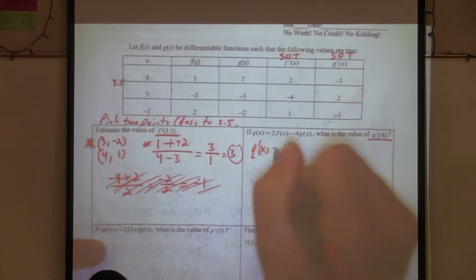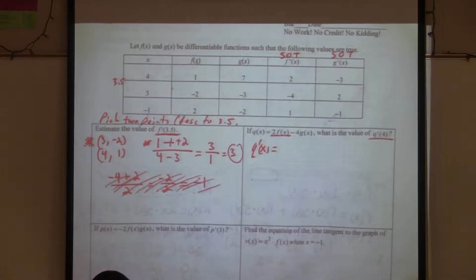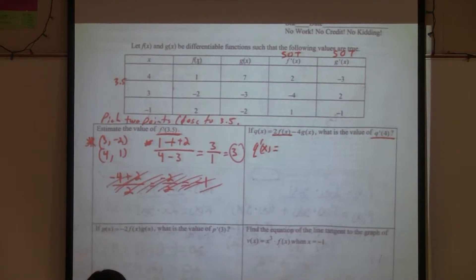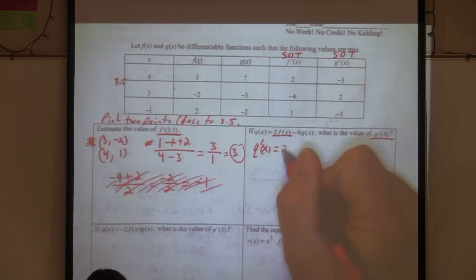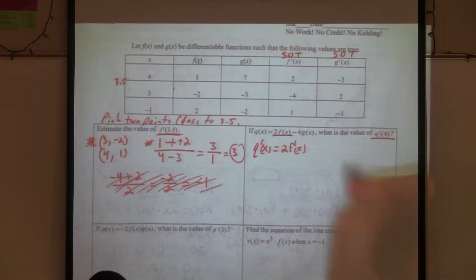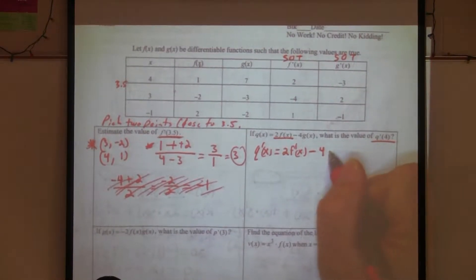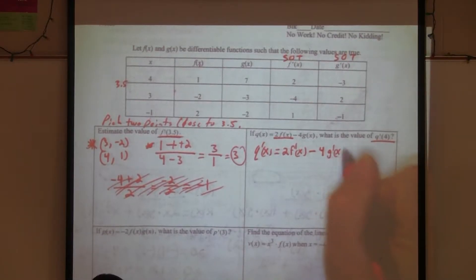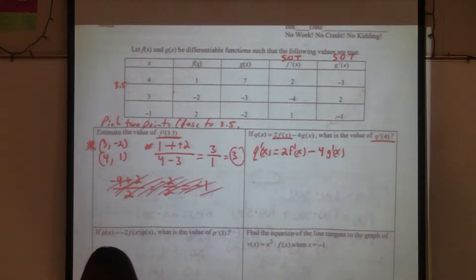q prime of x is going to equal — what's the derivative of this first part? Two. So, two times f prime of x minus four times g prime of x. We didn't have to use the product rule here. We just have to find the derivative of each part.